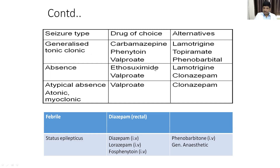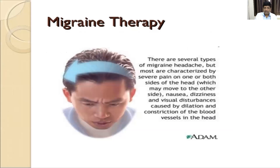For absence seizure, the drug may be ethosuximide or valproate; alternative is lamotrigine and clonazepam. For atypical absence, atonic, or myoclonic seizure, the drug of choice is valproate and alternative is nitrazepam. For status epilepticus — a seizure episode lasting more than 30 minutes — the drug of choice can be diazepam, lorazepam, fosphenytoin, or phenytoin; alternative drugs include phenobarbitone.